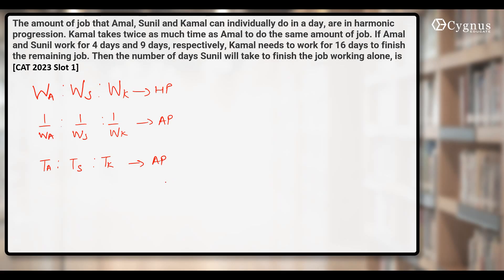It is given that Kamal takes twice as much time as Amal to do the same amount of job. If Amal and Sunil work for 4 days and 9 days respectively, and Kamal needs to work for 16 days to finish the remaining job, then how many days will Sunil take to finish the job working alone?